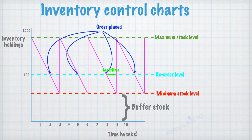So for example, if they're making an order at week eight, then they're getting their delivery at week nine. And with inventory control charts, you can work out either the lead time if you know the reorder level,